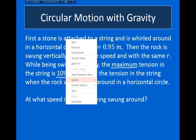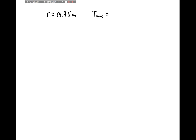Let me open up a blank screen and write down what was given. The radius is equal to 0.95 meters, and the maximum tension in the vertical loop is equal to 110% — that is, 10% larger — than the tension in the horizontal loop. I want to come up with a way to relate these two things.